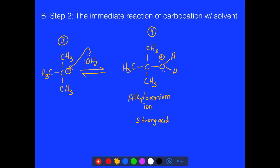The alkyloxonium ion is the conjugate acid of an alcohol, and it's a really strong acid that readily deprotonates. Notice that this reaction is in equilibrium — it can go back and forth with relative ease. This alkyloxonium ion is also described as a strong acid in the next step.